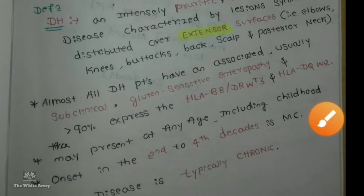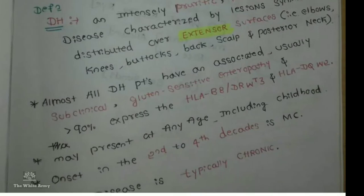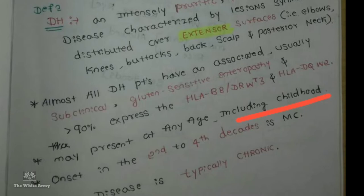This disease may manifest at any age, including childhood. Onset is most common at the 2nd or 4th decade. The disease is typically chronic.